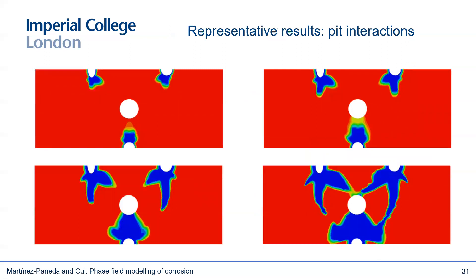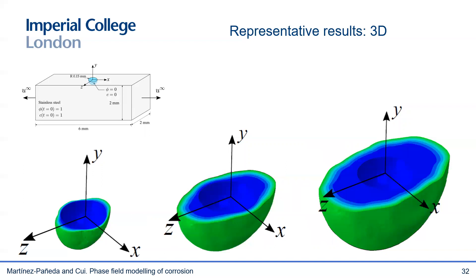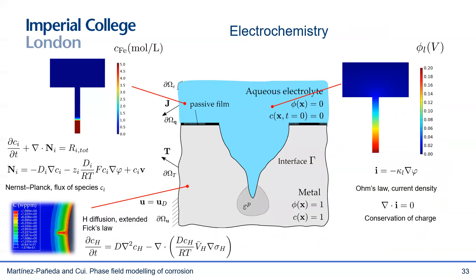Finally, some images showing that once phase field is used, complex morphologies can be predicted, such as the interaction of multiple pits. And here are some 3D results to emphasize that it takes no effort to go into the 3D domain — it's a very powerful tool. The opportunities are immense. You can couple this with microstructural modeling, with phase field fracture and fatigue models, with hydrogen embrittlement models, and so on. Some of our current efforts involve resolving the electrochemistry — solving for the transport of ionic species, for the electrolyte potential, for the uptake and transport of hydrogen in bulk, and so on.